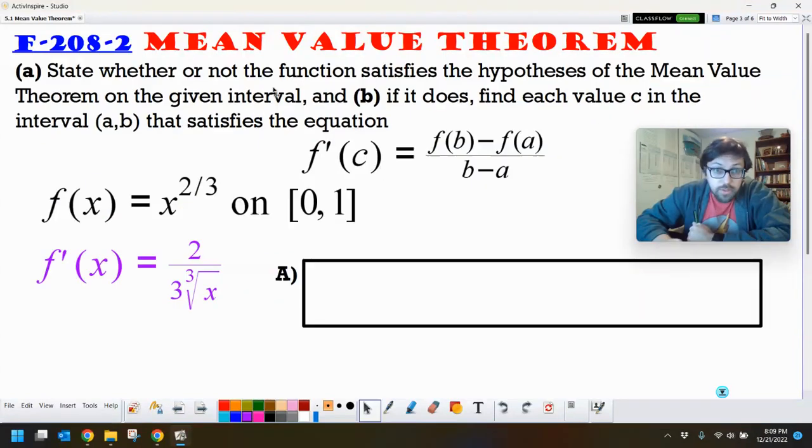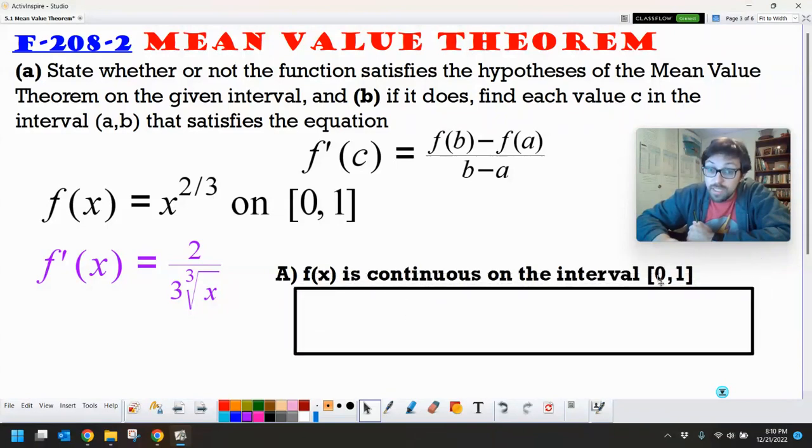Let's try this thing out. So we need to state whether or not this function satisfies the Mean Value Theorem. So we need to be continuous on the closed and differentiable on the open. This is just a cubed root function. Yeah, it's getting squared, but that's not going to cause us any issues in terms of continuity. We don't get like zeros in the denominator and stuff like that. So it is definitely continuous on our interval of zero to one.